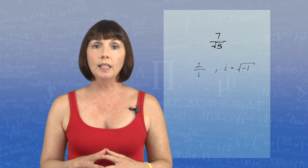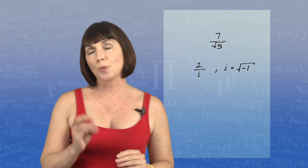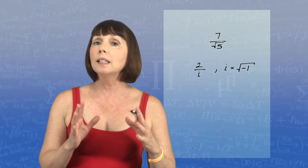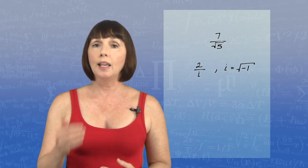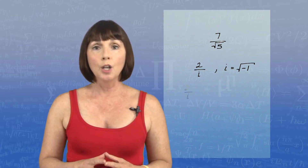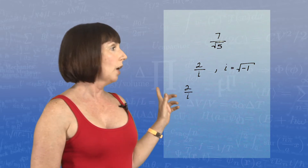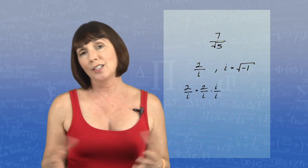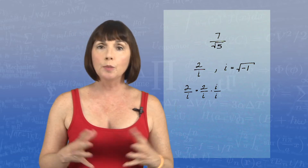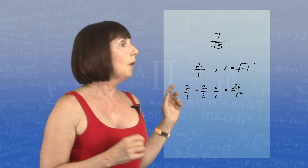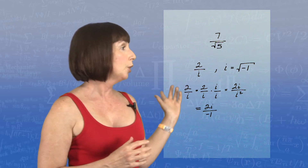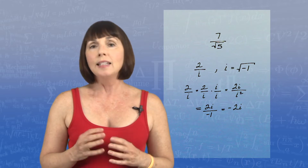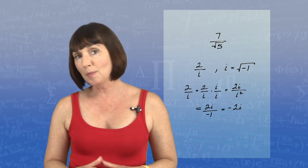So something like this — 2 over i, where i is equal to the square root of negative 1 — is not considered simplified. We can simplify it by multiplying the numerator and the denominator by i. So 2 over i equals 2 over i times i over i. Multiplying through, we get 2i over i squared, which equals 2i over negative 1, or negative 2i. Now we've eliminated the imaginary unit in the denominator.